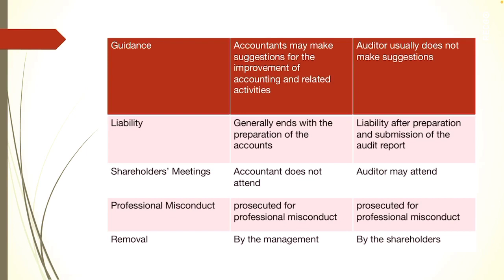The last point is removal. An accountant can be removed by the management of the company, as the management is the one who appoints the accountant. Whereas an auditor can be removed by the shareholders, as the auditor is appointed by the shareholders or regulators — so shareholders and regulators have the right to remove the auditor. These are the points which differentiate accounting and auditing. If you have any doubt, please discuss and clear it. We will discuss other things in the next class. Thank you.